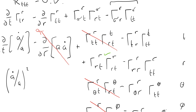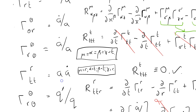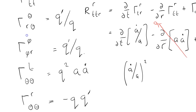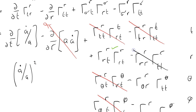Let's do some of these other terms. Christoffel(R, T, R) times Christoffel(T, T, T) - we know T, T, T is zero, so this disappears, which is nice. What about Christoffel(R, R, R)? Was that on my list? No, it wasn't on my list, so that's a zero.